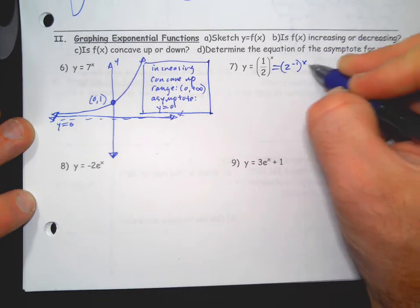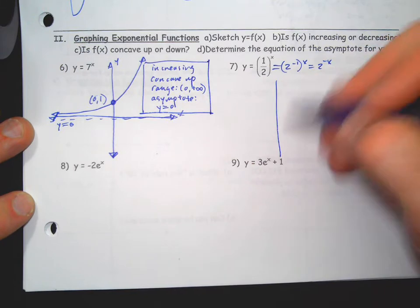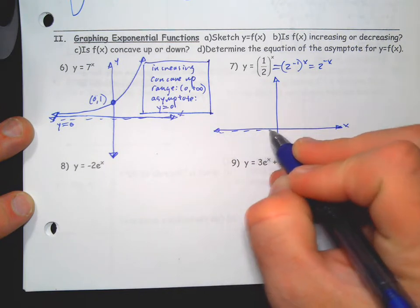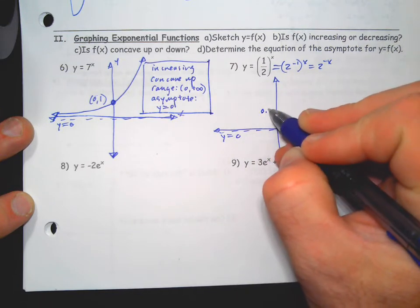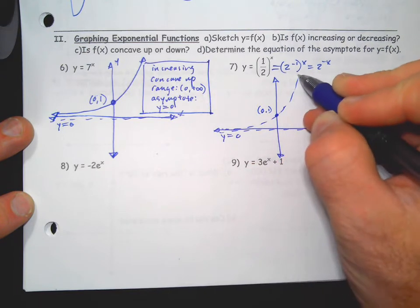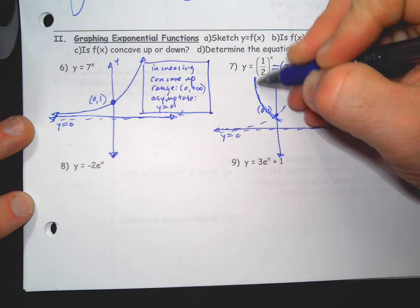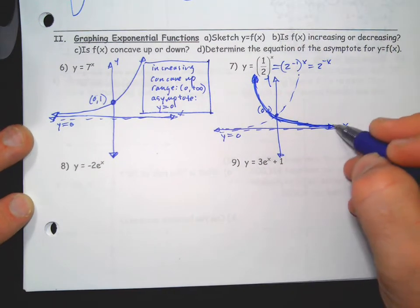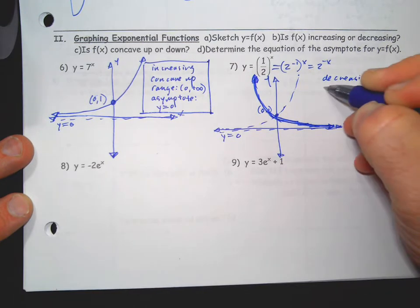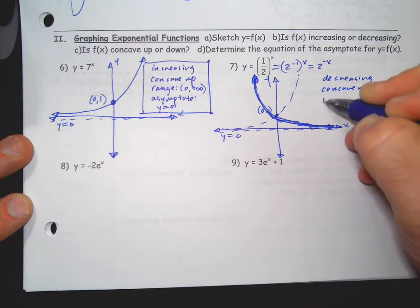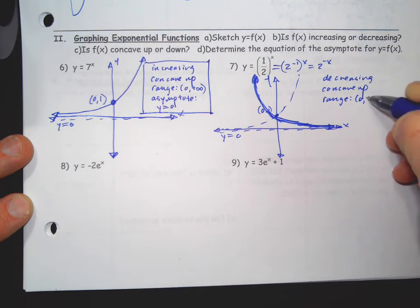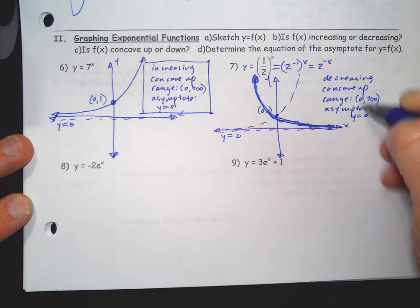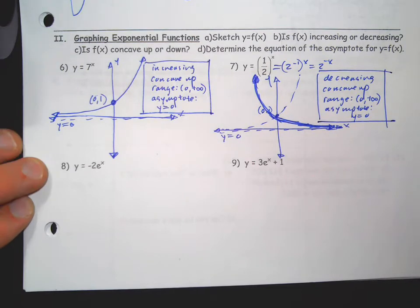Which is y equals zero. Number seven, I find it easier to rewrite these like this, but it's up to you. We graph the parent function to the x, and then the negative flips it. That's your final answer. It is decreasing, concave up. Its range is zero to infinity and its asymptote is y equals zero.